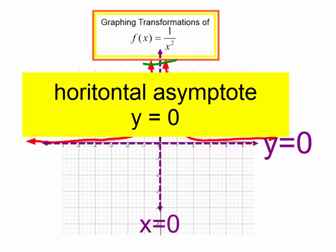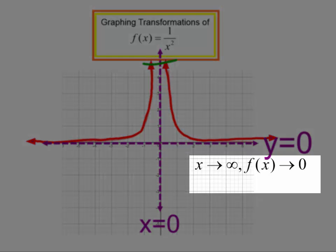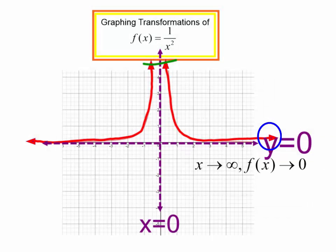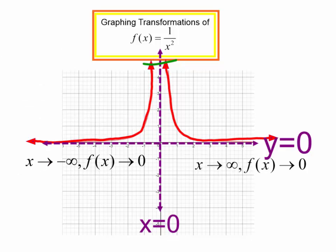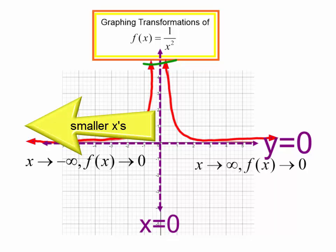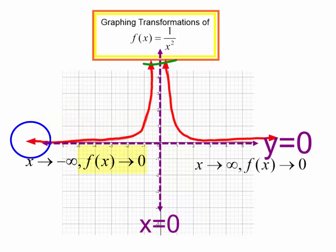Let's talk a little bit about end behavior. As my x's approach positive infinity, my f(x) — this red function — is leveling off. It's not going up, it's not going down. It's approaching the line y equals 0; my f(x), my y's, are approaching 0. Looking to the left of the graph, as my x's are approaching negative infinity, my y's are also approaching 0.